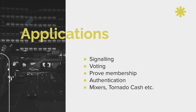In a system like this there are a lot of applications which can be derived. A user can do signaling anonymously, vote on certain polls without revealing who they are, prove that they are a member of a certain group, set, or community without revealing their actual identity. This can also be used for anonymous authentication across web2 and web3 platforms, and there are mixers like Tornado Cash which is part of this assignment.